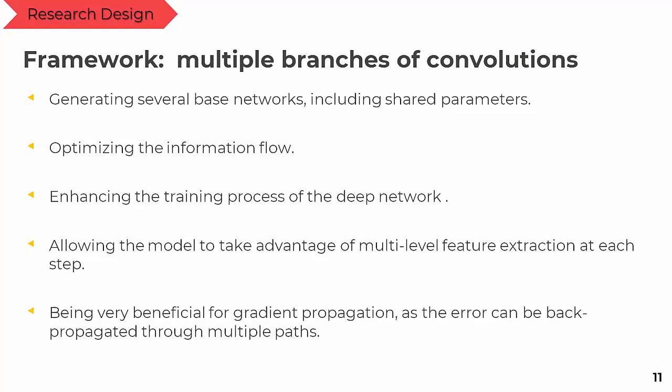Our proposed model has multiple branches of convolution. The benefit of doing this is generating several base networks including shared parameters, optimizing the flow, enhancing the training process, and allowing the model to take advantage of multi-level feature extraction at each step. This is very beneficial for gradient propagation as the error can propagate through multiple paths.